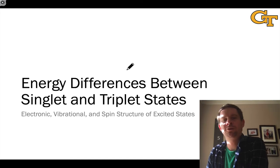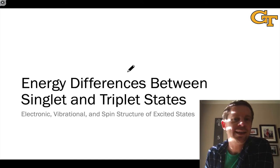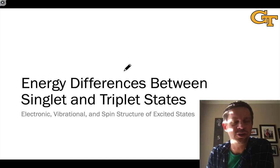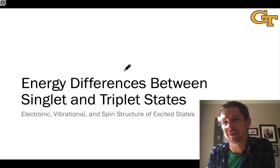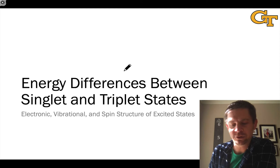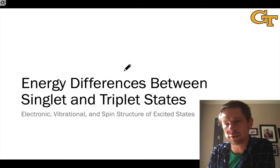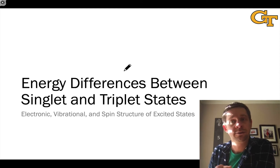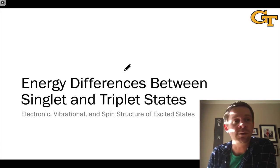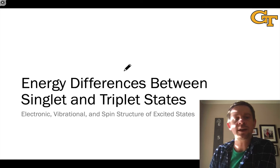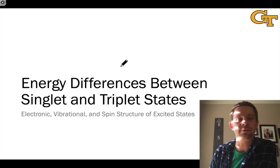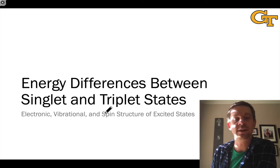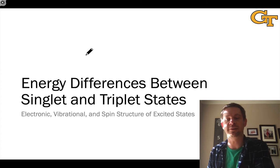Most of this lesson has been devoted to laying down the representational conventions and the specific aspects of excited state structure that we want to pay attention to. Now we're going to transition into connecting the structure of an excited state with some energy aspects of its various possible states and configurations. In particular, we're going to focus on this energy difference between the singlet and triplet states that we introduced in the last video.